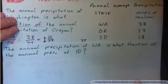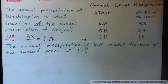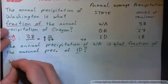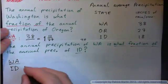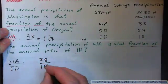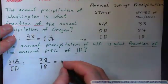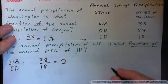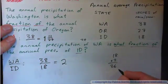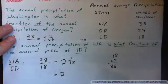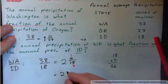Now: the annual precipitation of Washington is what fraction of the annual precipitation of Idaho? Washington is what fraction of Idaho means we put the Washington number over the Idaho number. The Washington number is 38 and the Idaho number is 18 — 38 over 18. 18 into 38 goes twice. 18 times 2 is 36, so the remainder is 2, giving 2 and 2/18. Can we simplify? 2 into 2 goes once, 2 into 18 goes 9 times — so 2 and 1/9.